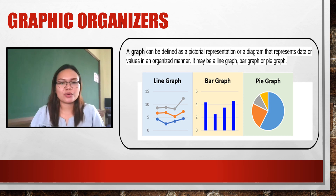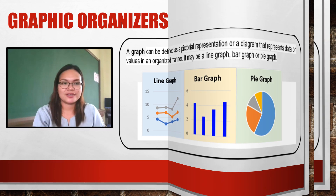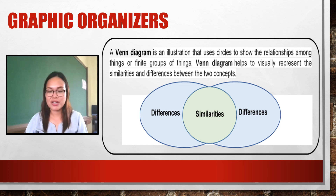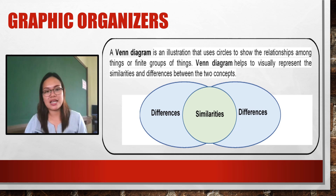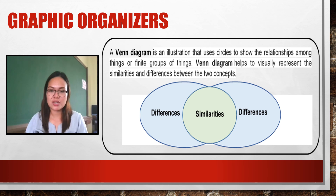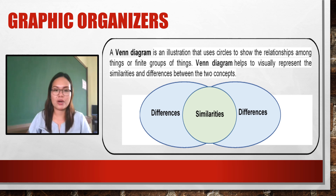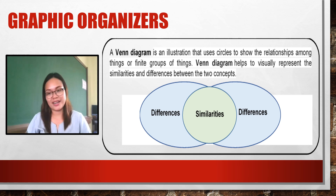The last one is the Venn diagram, which is commonly used in English subjects. A Venn diagram is an illustration that uses circles to show the relationship among things or a finite group of things. It helps visually represent the similarities and differences between two concepts. It is most commonly used when you are asked to read a story and identify differences and similarities — using a Venn diagram makes it easier and shows creativity.